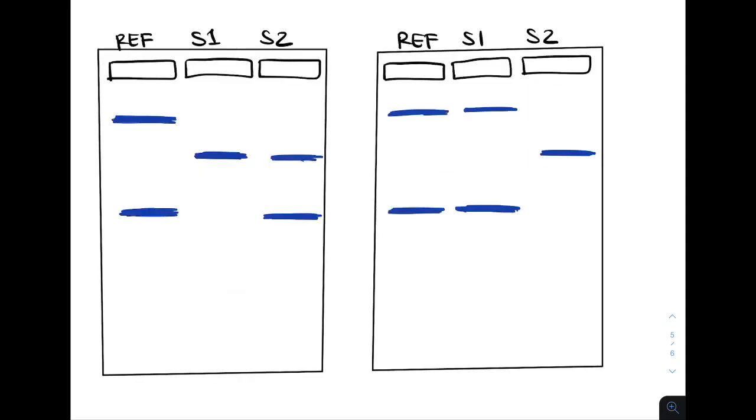Looking at the gel on the left, we can tell that all individuals are innocent, because none of them have two bands that match both of the bands of the criminal. On the right, suspect two is innocent, but suspect one could be guilty because for these two alleles, their DNA matches the criminal.